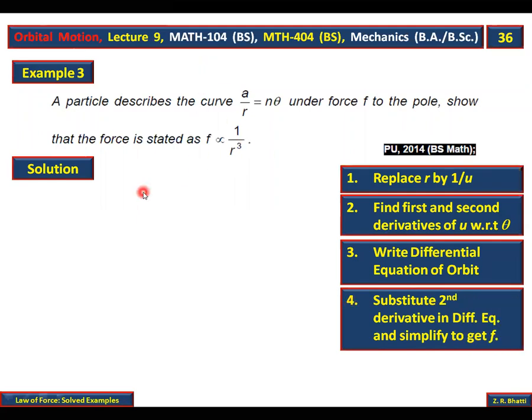So, this is a over r equals n theta. The first step is 1 over r to replace u. That will be a divided by u. And after that, differential equation of the orbit. Next step, second derivative.